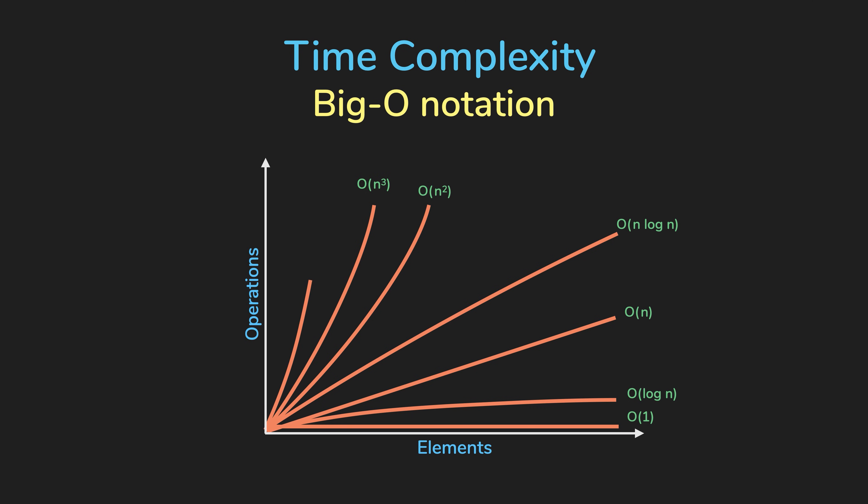Exponential time complexity, O(2^N), multiplies the number of operations whenever there is an additional input. Think about the number of attempts needed to guess a three-digit password versus a four-digit password — we increase the length by one, but the number of attempts increases from 1,000 to 10,000.